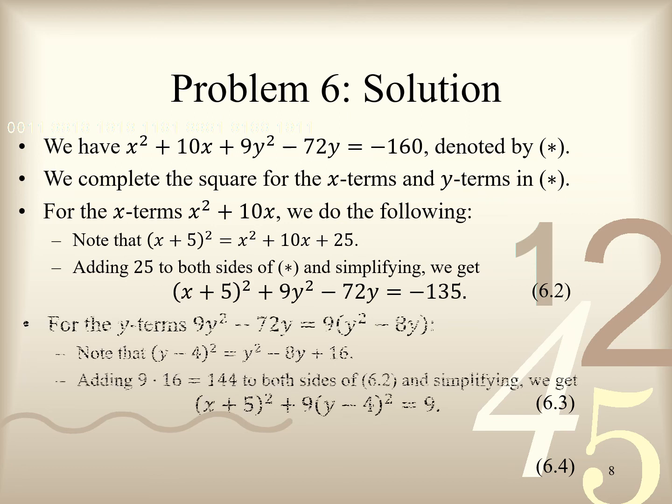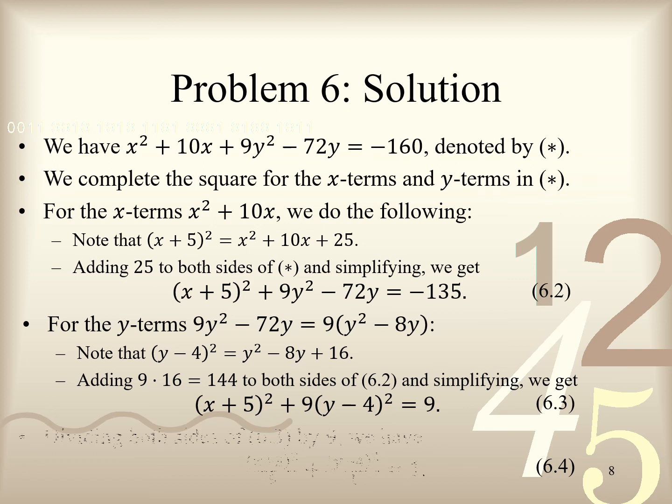For the Y terms 9y² - 72y, which we factor as 9 times (y² - 8y), we use a similar procedure. Note that (y - 4)² equals y² - 8y + 16. Adding 9 times 16, which equals 144, to both sides of 6.2 and simplifying, we get (x + 5)² + 9(y - 4)² = 9, which we label as 6.3.